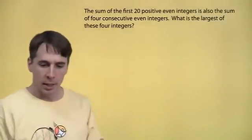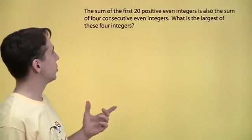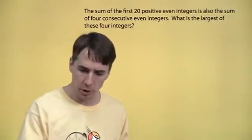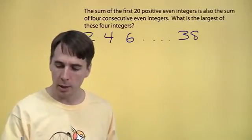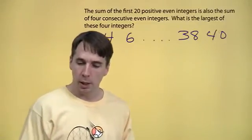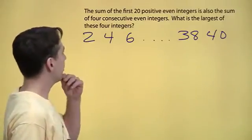Here we go. Here's the problem. Sum of the first 20 positive even integers. Well, we know what those integers are. We start from 2 and go up 4 and then 6 and then so on up to 38 and 40. And we have to find the sum of these.